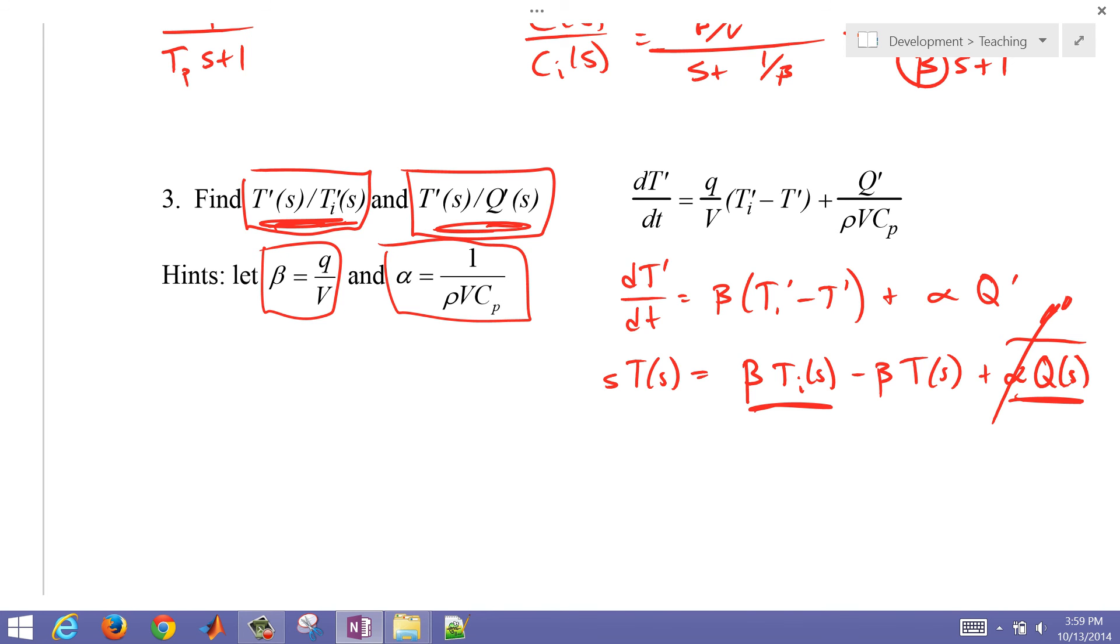And then I can get my transfer function of T of S over Ti of S, and that is going to be beta over S plus beta, and that is going to be 1 over 1 over beta S plus 1. And so I'm putting it into a standard form, Kp over tau_P S plus 1, my gain is 1, and my time constant is 1 over beta.